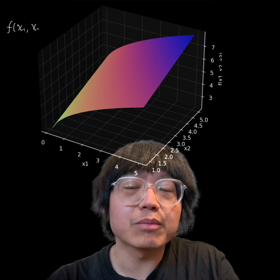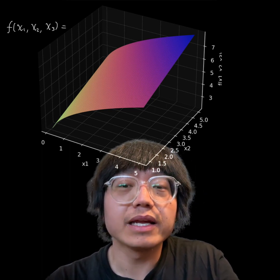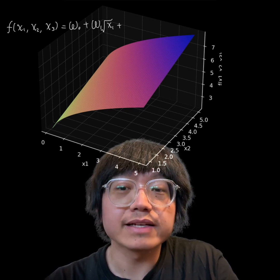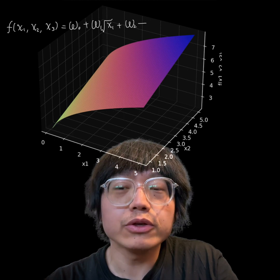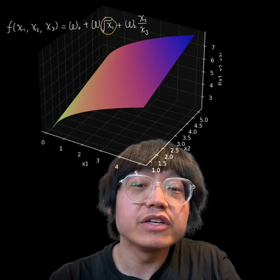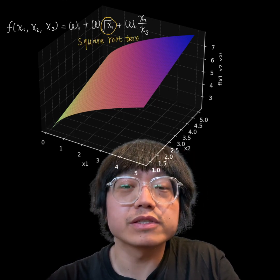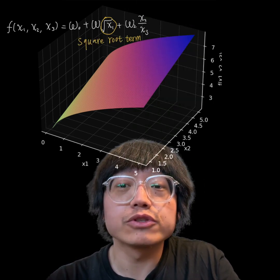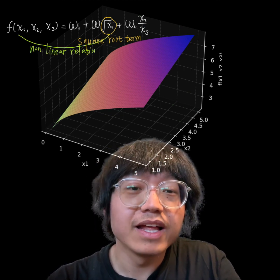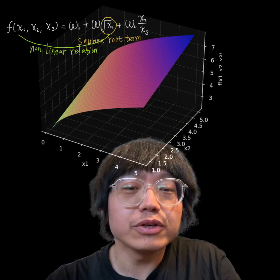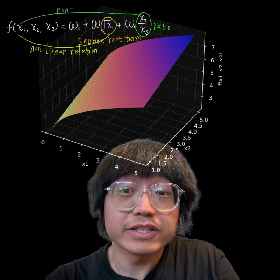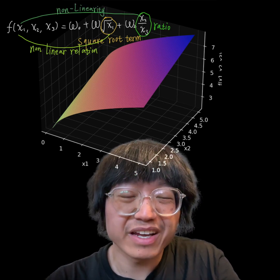The first function, f of x₁, x₂, x₃, equals ω₀ plus ω₁ times the square root of x₁ plus ω₂ times x₂ divided by x₃. This function features a square root term of x₁, indicating a nonlinear relationship with x₁. The term x₂ divided by x₃ is a ratio which introduces a nonlinearity through the division of one feature by another.